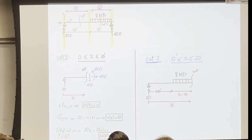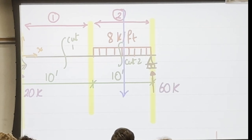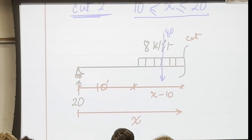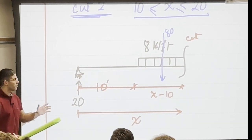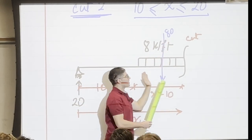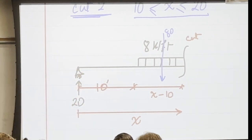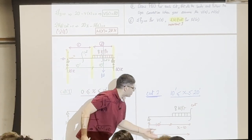A common mistake: don't convert the entire distributed load to a single point load of 80 and place it at the cut. That 80 represents the full 10-foot distributed load, but the cut can be anywhere within region 2. We only include the portion of the distributed load from x = 10 to the cut, which is x - 10, so the equivalent point load is 8(x - 10).